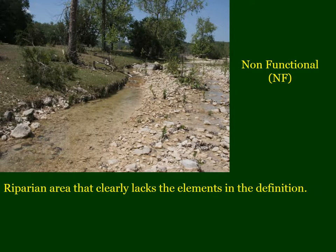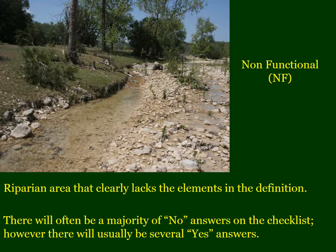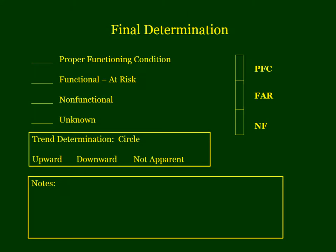A non-functional riparian area is one that clearly lacks the elements in the definition. There will usually be a majority of no answers on the checklist, but there will also usually be some yes answers — it's a consensus determination by the team. If you agree the riparian area is functional at risk, you then look at a thermometer scale and determine where on that scale the condition falls, from very high functional at risk near PFC down to lower on the scale.